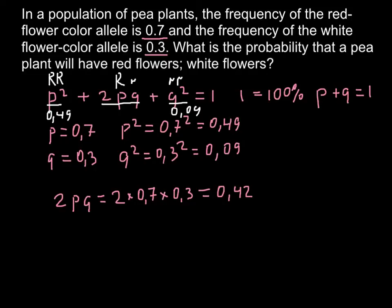So this is going to be frequency of the heterozygous. So this is going to be 0.42. And let me repeat the question. What is the probability that pea plant will have red flowers and white flowers? So these two genotypes here would equal to one phenotype that is going to be red flowers. So this is plus here.